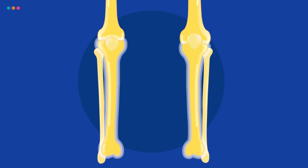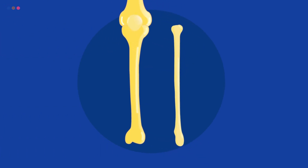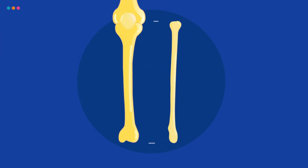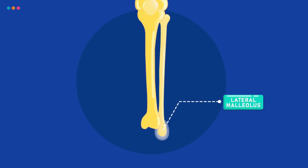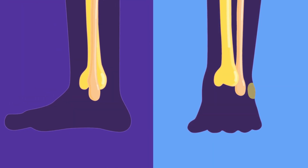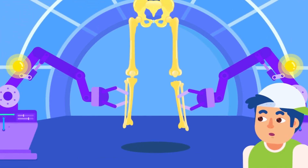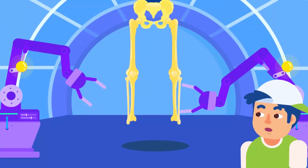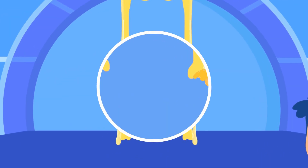The tibia, or shin bone, is far thicker than its neighbor and is located on the inside, or medial portion, of the lower leg. Although the fibula is thinner, it is about the same length as the tibia. The lateral malleolus is the outside bottom end of the fibula — it is the protrusion on the outside of your ankle.